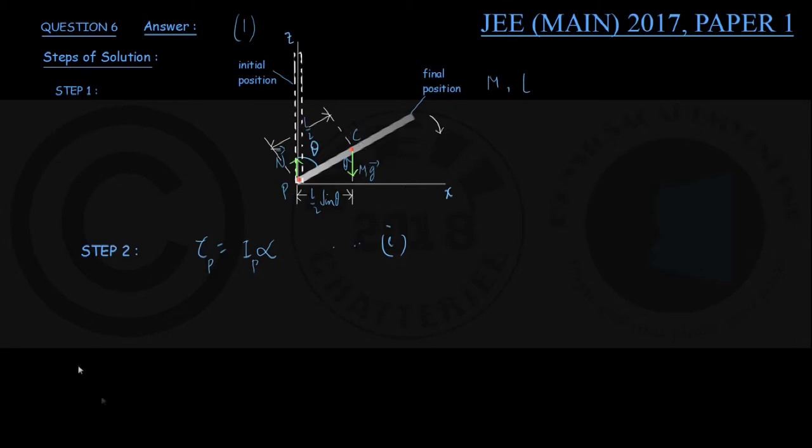Now in step number 3, what is the torque of the forces taken about the point P? See here, there are two forces: one is the force of gravity Mg through C, the other is the normal force N through the point P. So the force N passing through P itself produces zero torque about the point P.